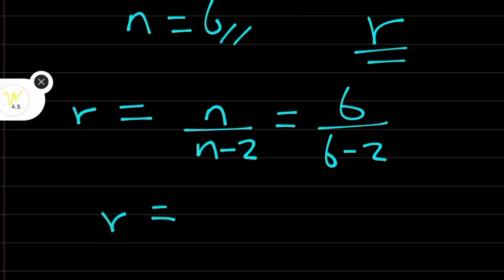The common ratio is equal to 6 over n minus 2. Common ratio is equal to 6 over 4. This is the same thing as 3 over 2. The common ratio is 3 over 2.